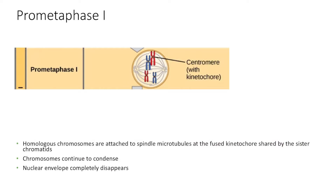Prometaphase I is similar to the prometaphase we discussed before. The nuclear envelope is completely dissolved, and the spindle fibers that come along now attach to the homologous chromosomes and fuse to their kinetochores.